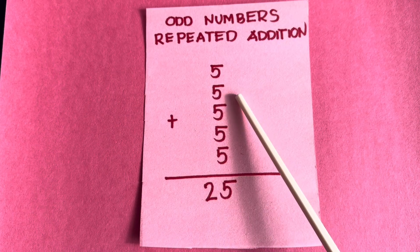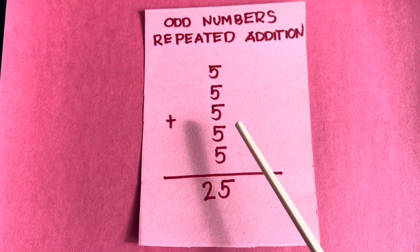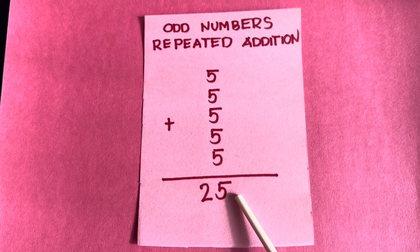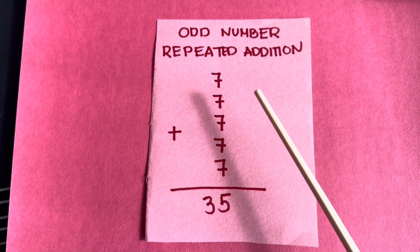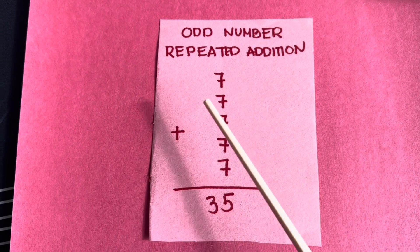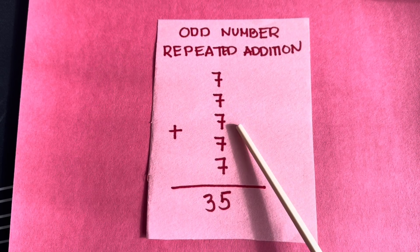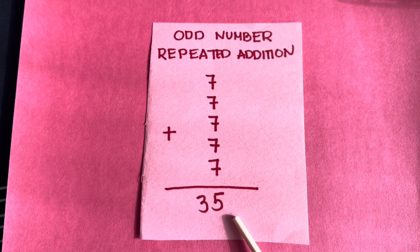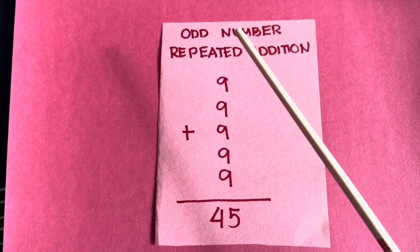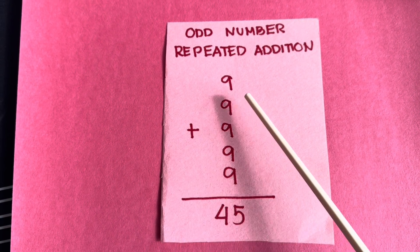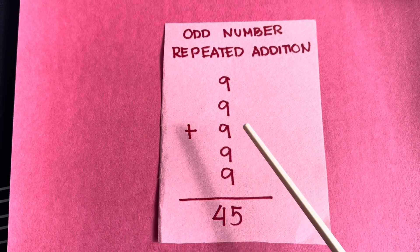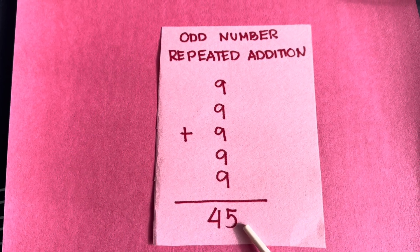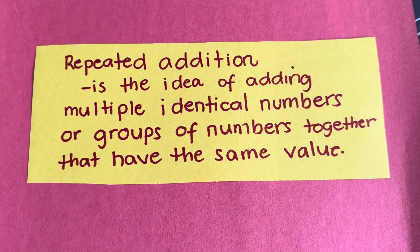5 plus 5 plus 5 plus 5 plus 5 is equals to 25. Let's try 7 plus 7 plus 7 plus 7 plus 7 is equals to 35. And finally, 9 plus 9 plus 9 plus 9 plus 9 equals to 45.